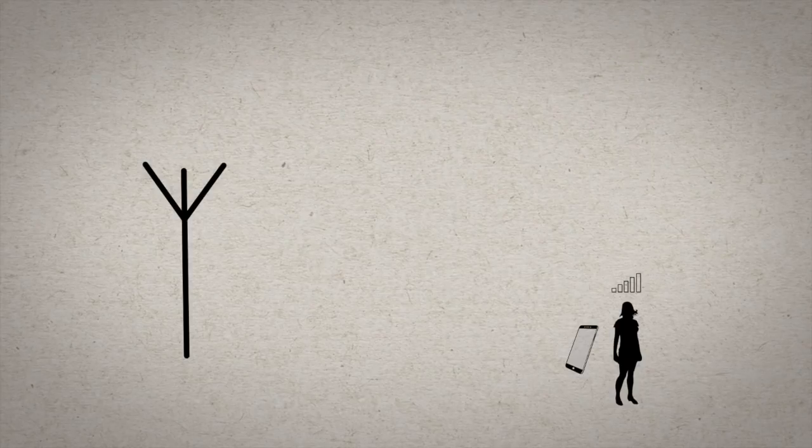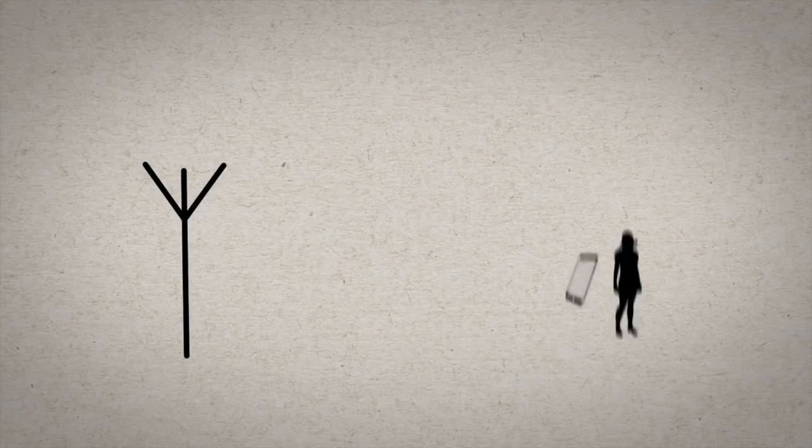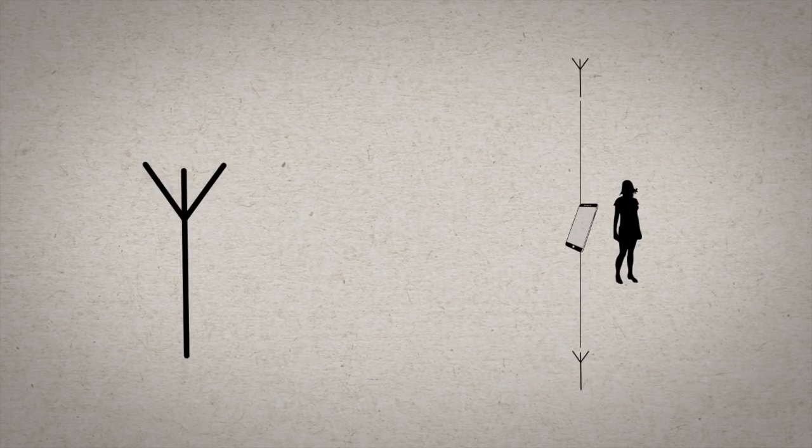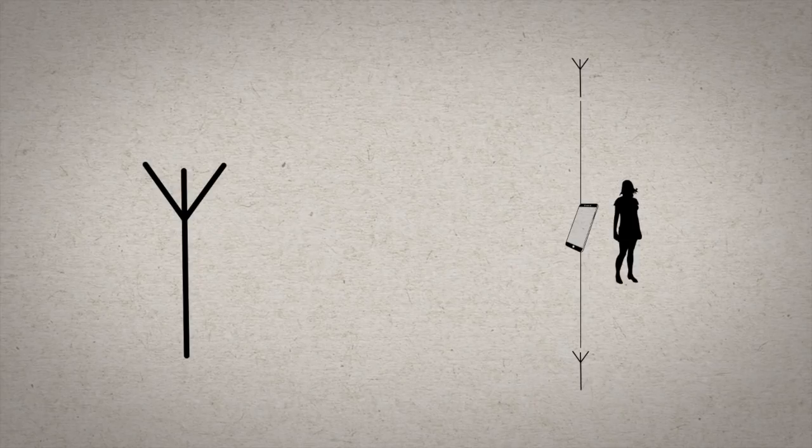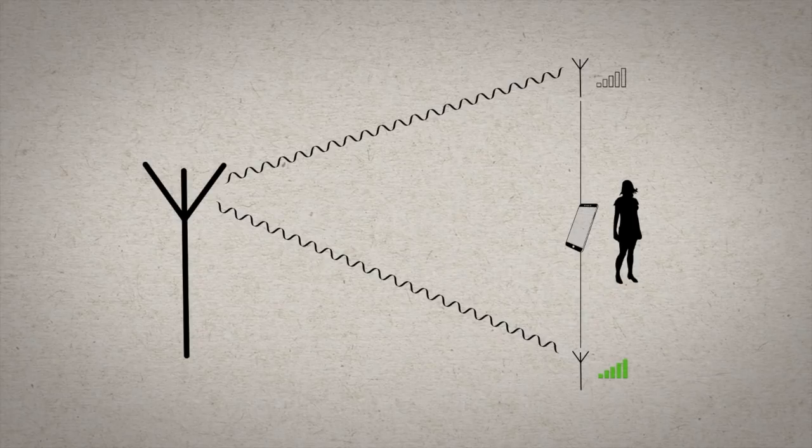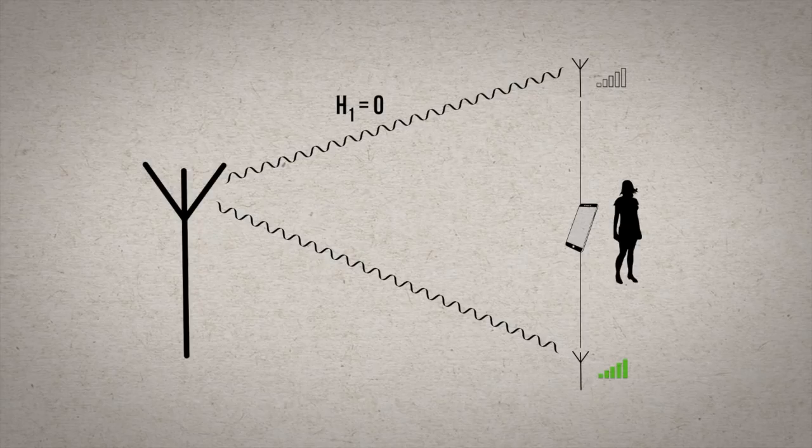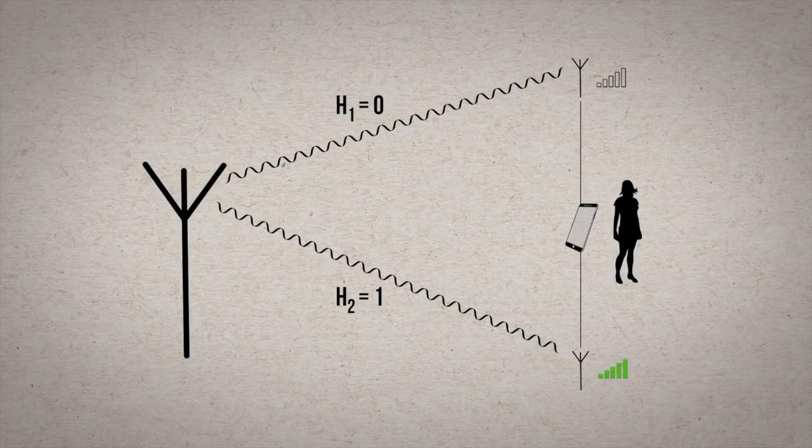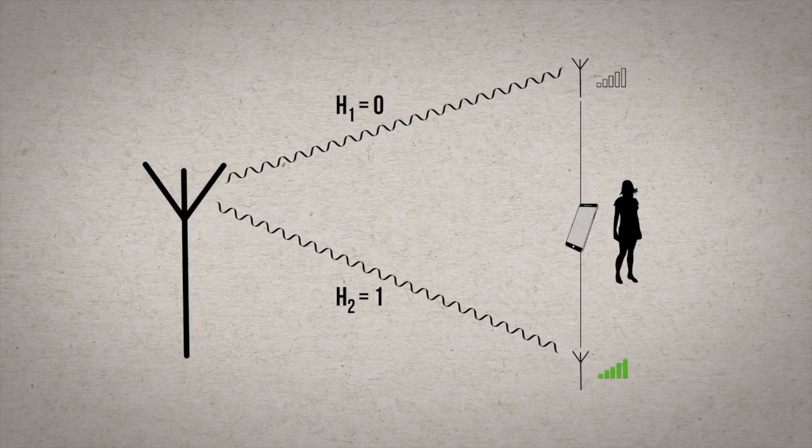So imagine we connected a second antenna to a mobile phone and separated them by some distance. Let's say receiver one experiences fading H1. Maybe it's perfectly destructive, so H1 equals 0. And receiver two experiences fading H2. In this case, it's a clean signal, so H2 equals 1. Now we have a better chance of receiving the signal because just one of the two possible channels needs to be good in order to recover the data.